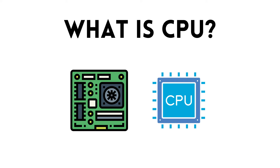CPU stands for Central Processing Unit. It is often referred to as the brain of a computer, as it performs the majority of the processing tasks that enable a computer to function. The CPU interprets and executes instructions from a computer's memory, performing basic arithmetic, logic, control, and input-output operations.